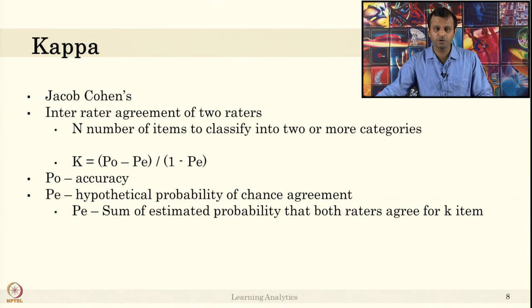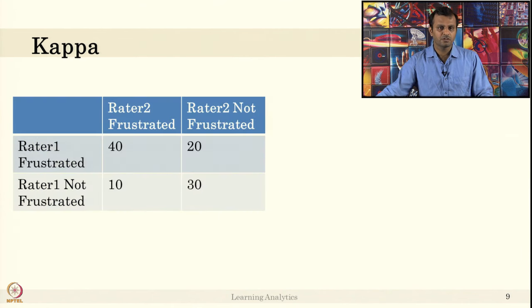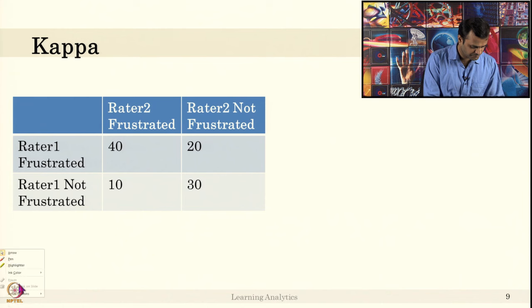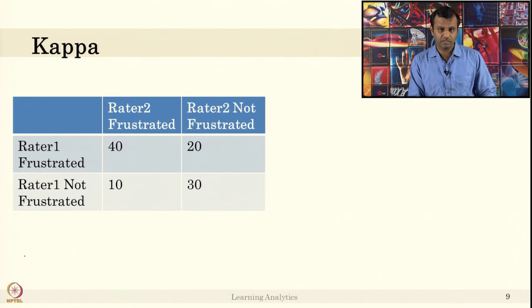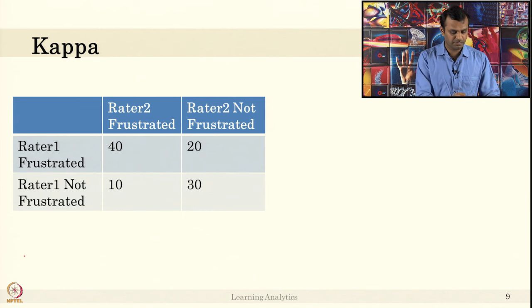Let us take this table. Let us understand the table first. There are two raters looking at students' facial expressions. They looked at 40 plus 20 plus 10 plus 30, so they looked at around 100 instances of facial expression. I am not telling 100 students. There might be two students, there might be one student, there might be like 50 students, but they have 100 instances of facial observations. Both observed all the 100 instances.